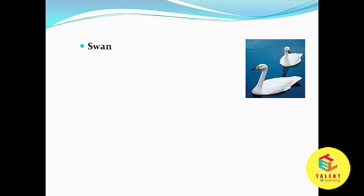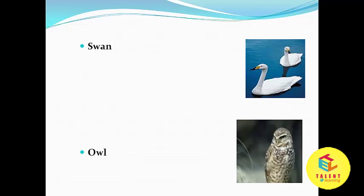Now, which is the next alphabet? Yes, it's S. S for swan. And here you can see the swan. Which is the next? Yes, it's O. O for owl. So it is an owl.